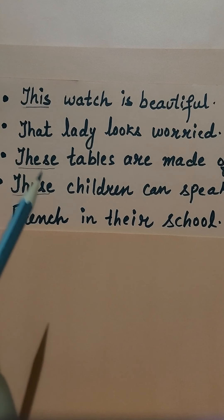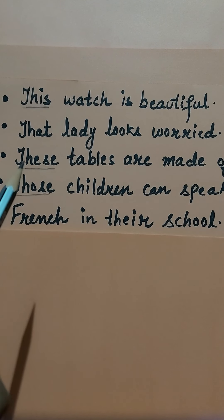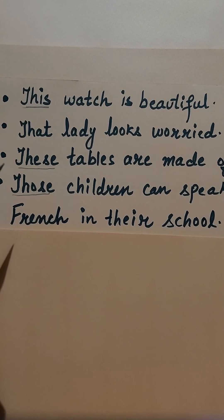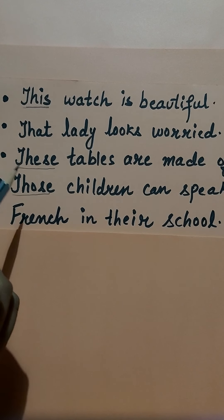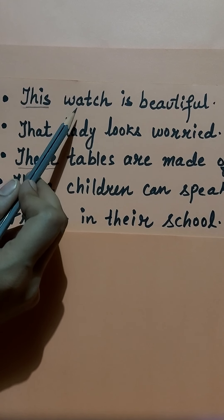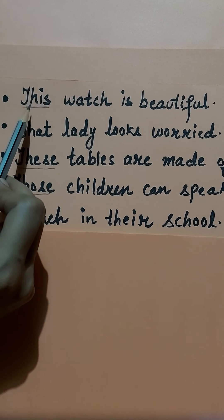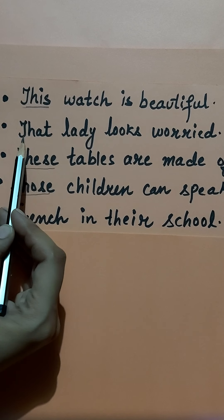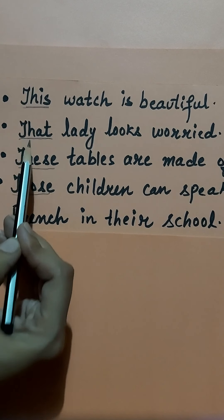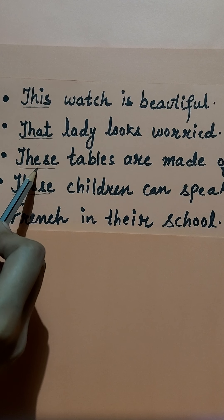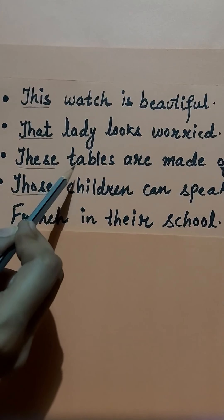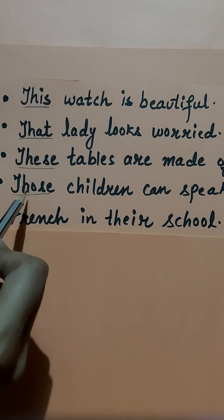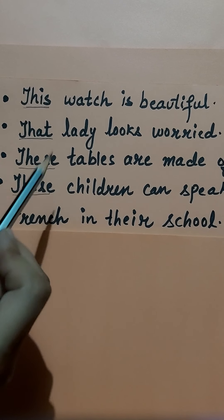An adjective which is used to point out some person or thing is called a demonstrative adjective, and remember that it answers the question 'which one.' Demonstrative adjectives describe a noun — they specify which noun we are pointing to. 'This watch' — pointing to the watch; 'that lady' — pointing to the lady; 'these tables' — pointing to the tables; 'those children' — pointing to the children.